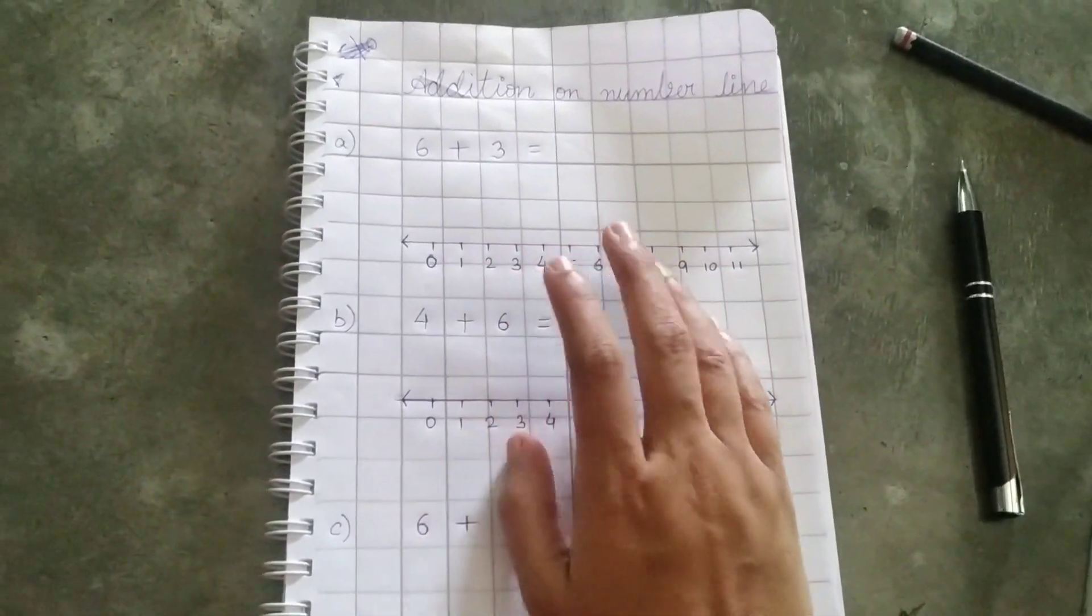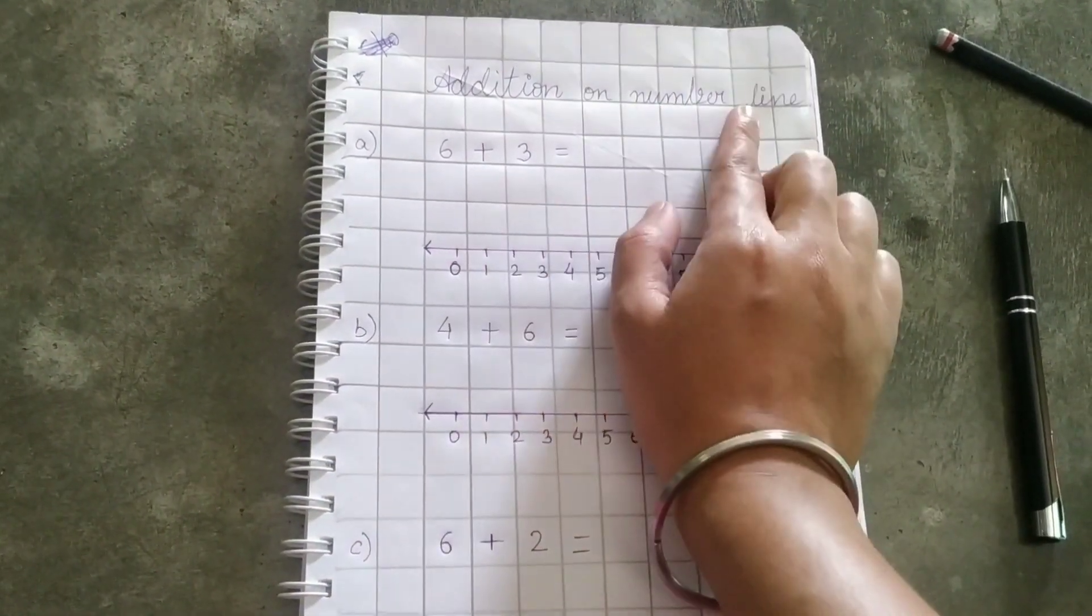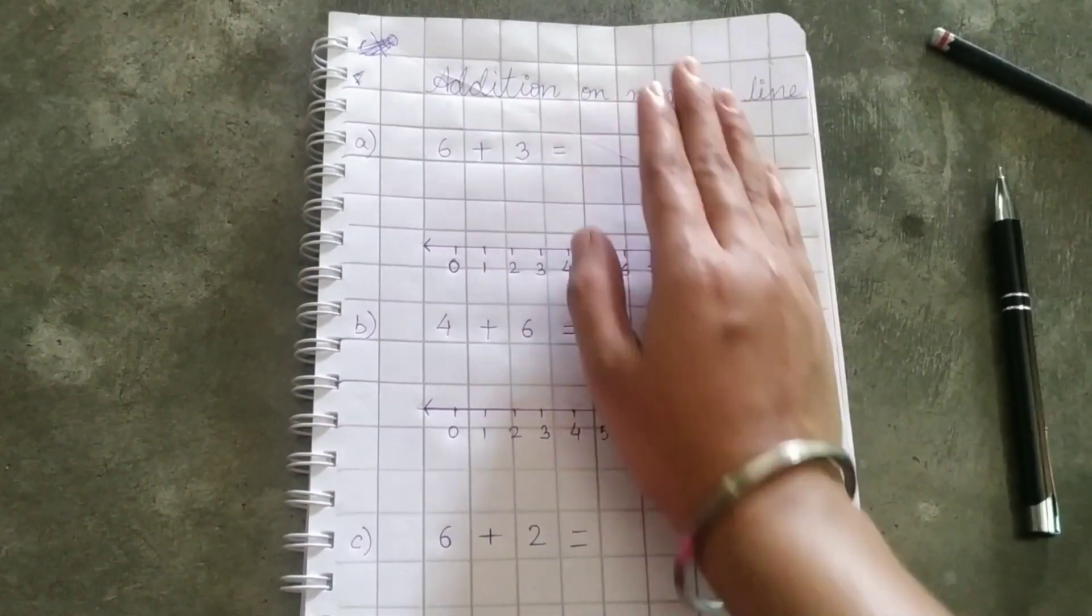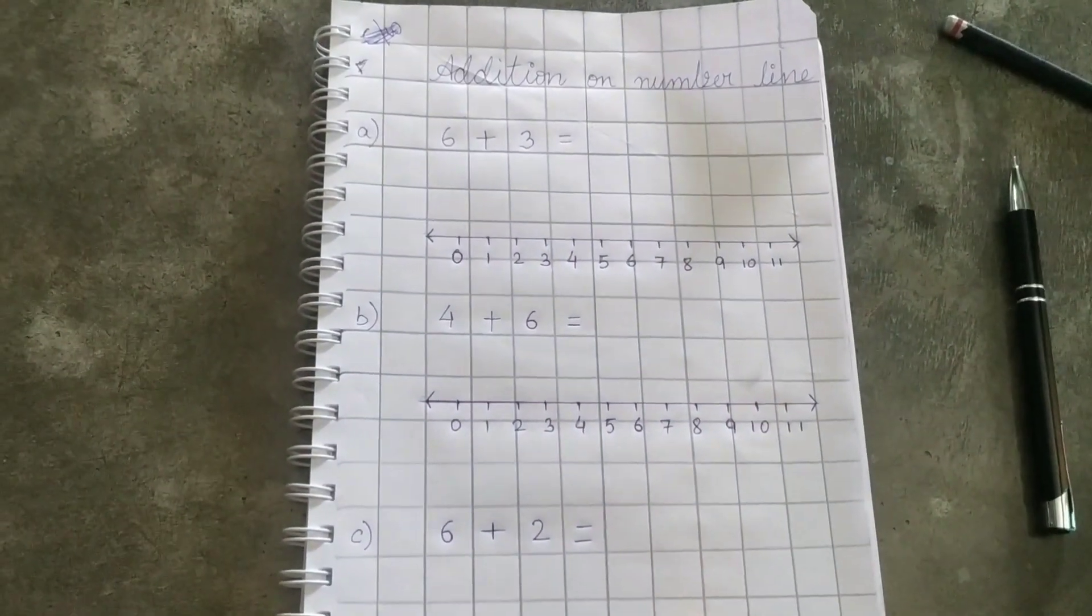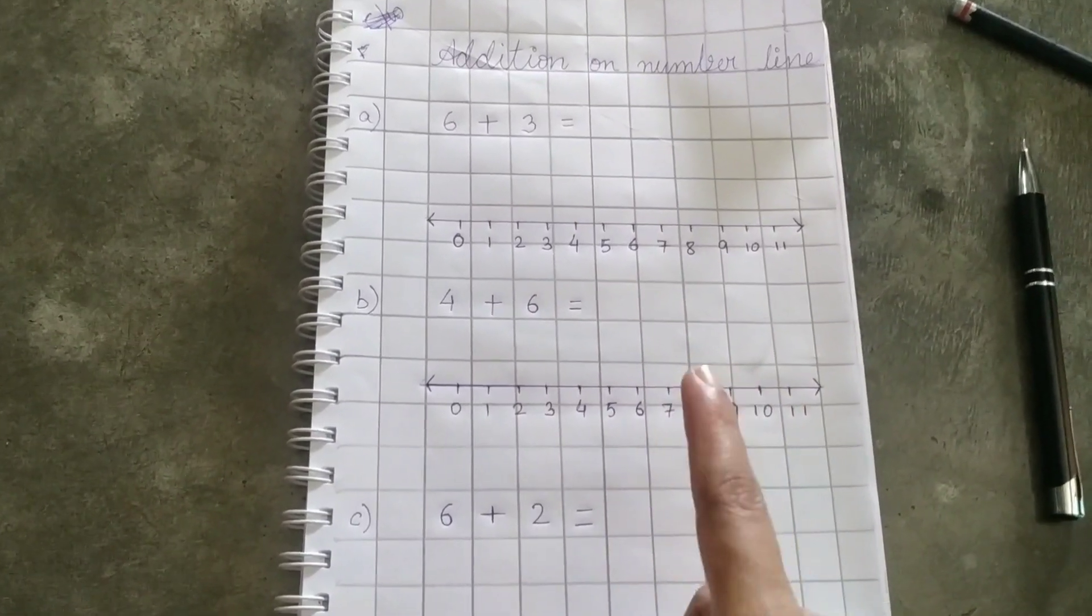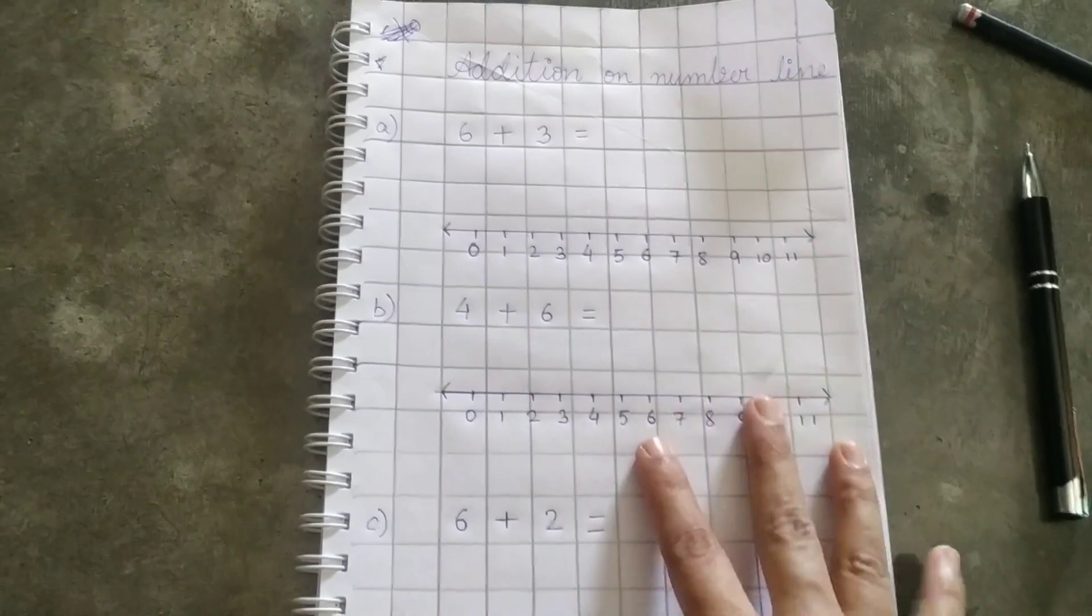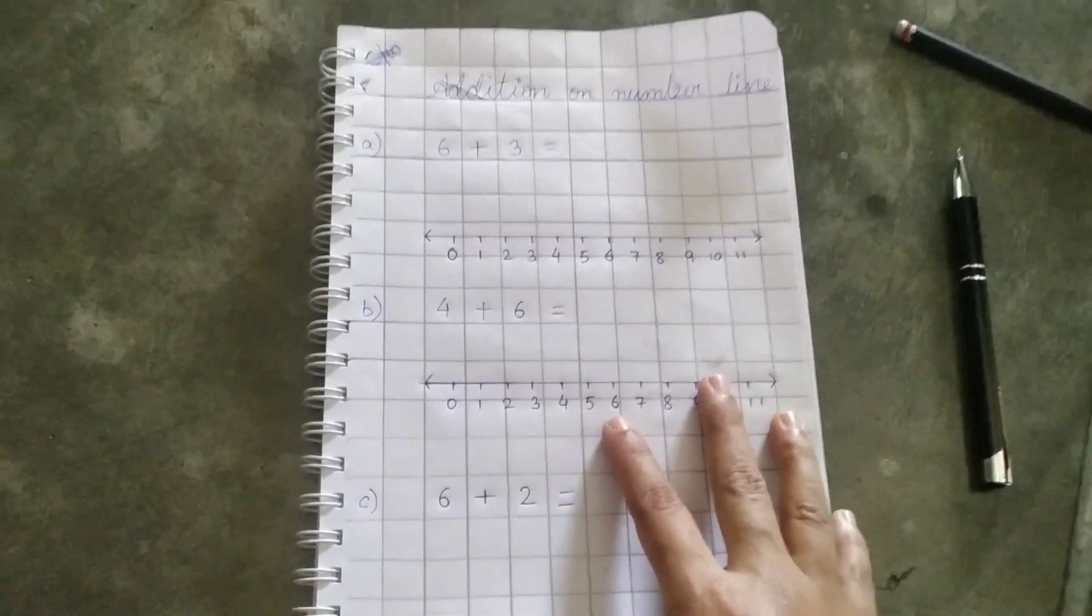So all of you open your math page and today we will do addition on number line. You have already learned this thing. Today we will revise this and along with this we will revise table of 5. I know you all have learned table of 5 and you know this as well but we have to revise this. So let's start.